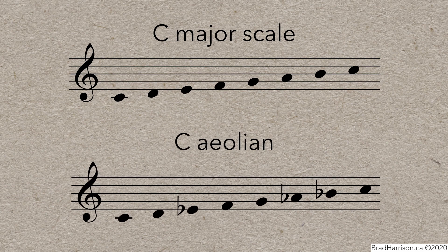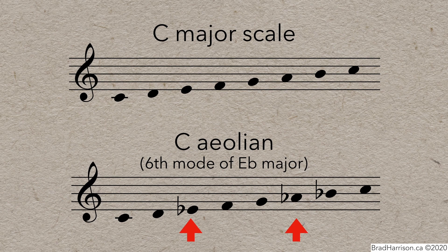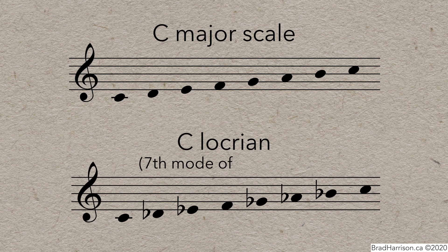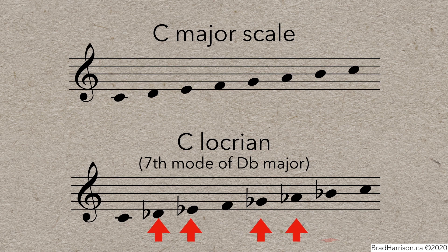C Aeolian, the 6th mode of Eb major, is C major with a lowered 3rd, 6th, and 7th. And C Locrian, the 7th mode of Db major, has the most alterations from C major, with a lowered 2nd, 3rd, 5th, 6th, and 7th.